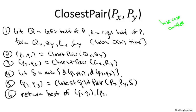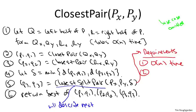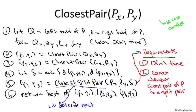What remains is to describe the implementation of closest split pair. We want the running time to be O(n) always. For correctness, we don't need it to always compute the closest split pair, but we need it to compute the closest split pair in the event that there is a split pair with distance strictly less than delta — strictly better than the outcome of either recursive call.